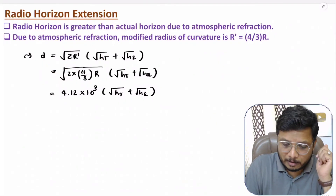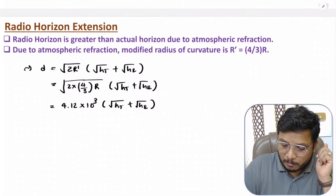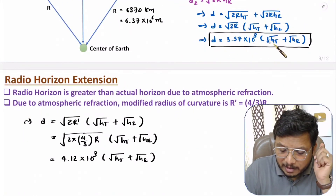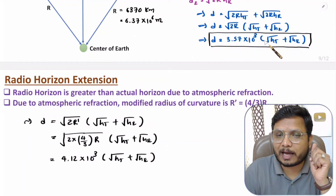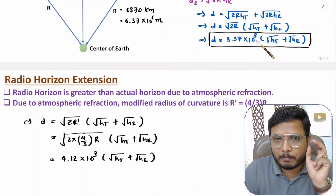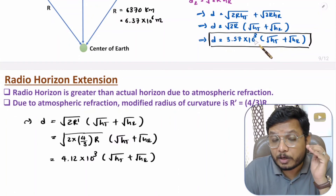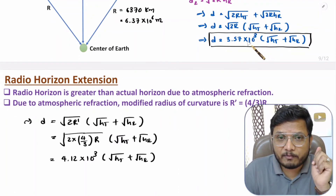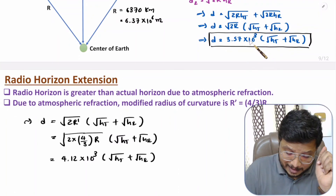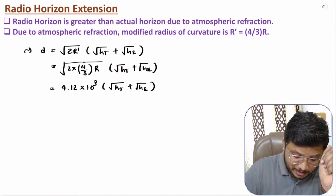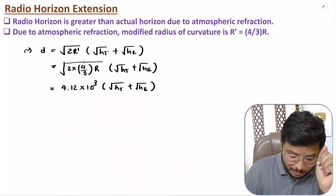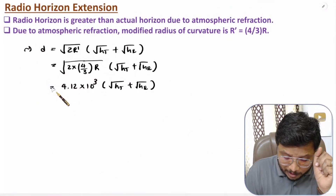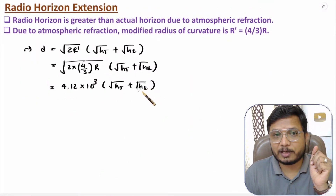So mathematically, the line of sight equation gives a theoretical range, but due to refraction of EM waves, there is an extension in range. The modified equation with R' = (4/3)R gives the actual practical range for space wave propagation.